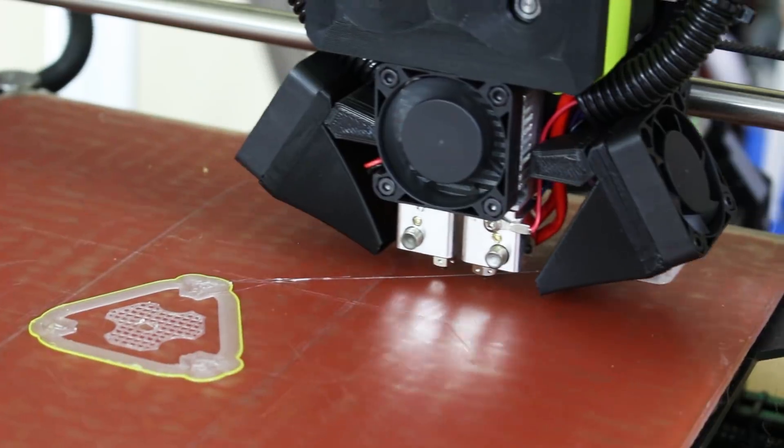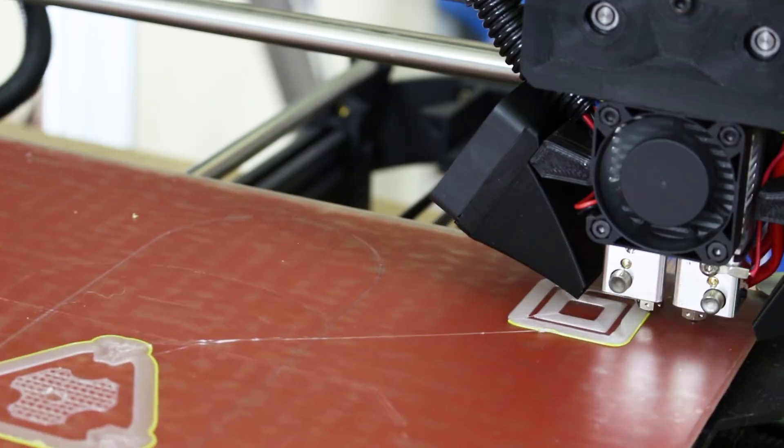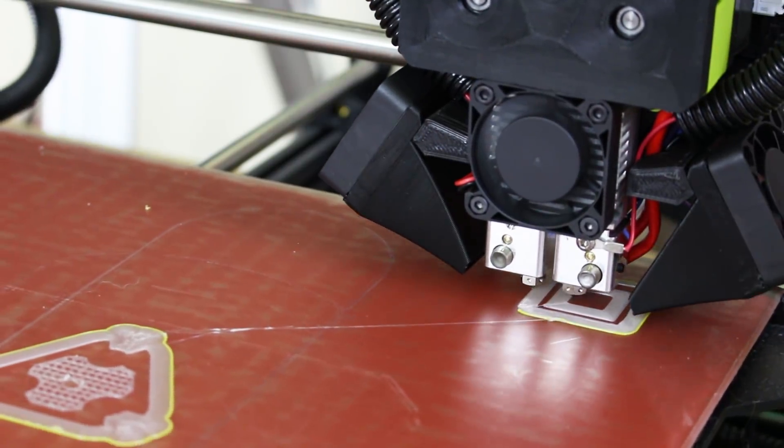Oh, there we go. So it's basically purging the nozzles in between use over in the corner there, so we don't get too much ooze between the colors, presumably.